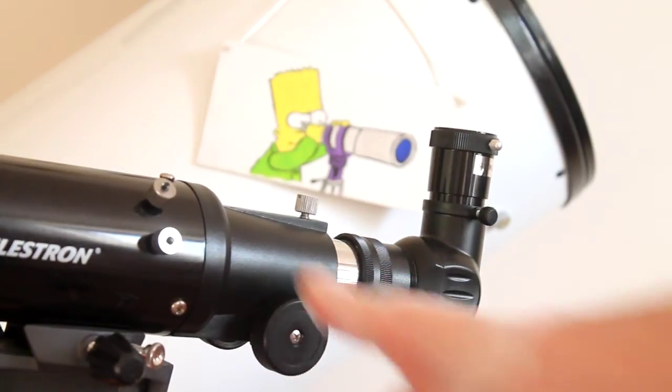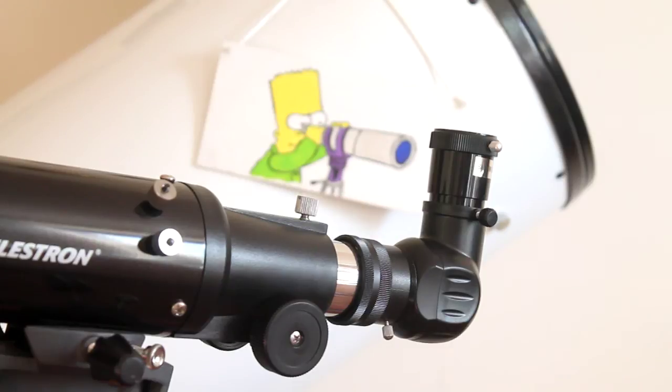I hope that helps. That's a low-cost solution on how to resolve the issue you get with the budget Barlow lenses that come with some Celestron refractor telescopes. I found the same problem with the Levenhuk Skyline 70.